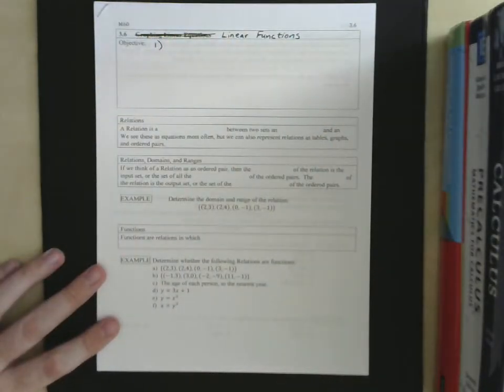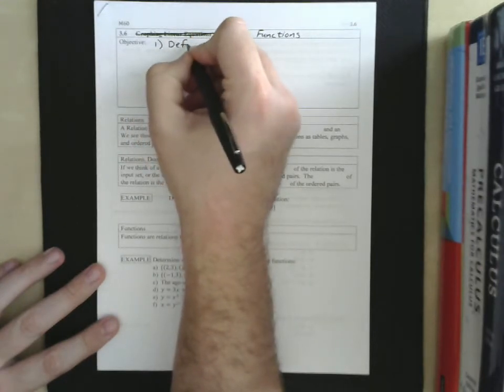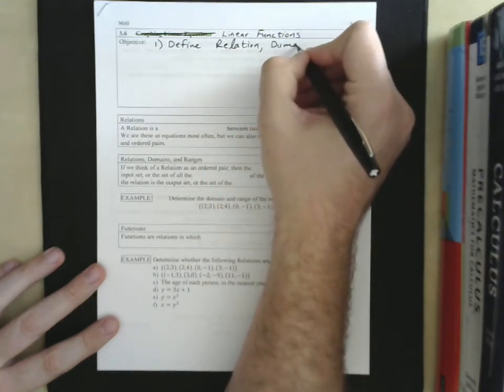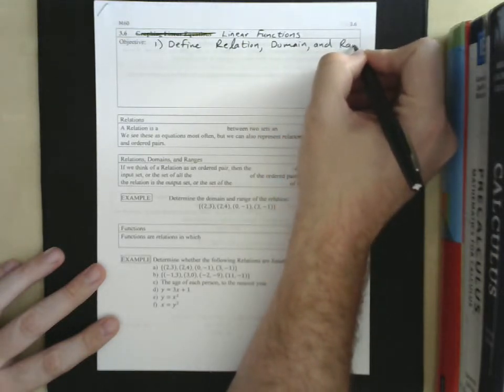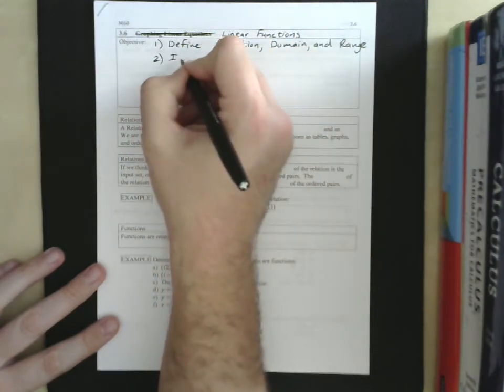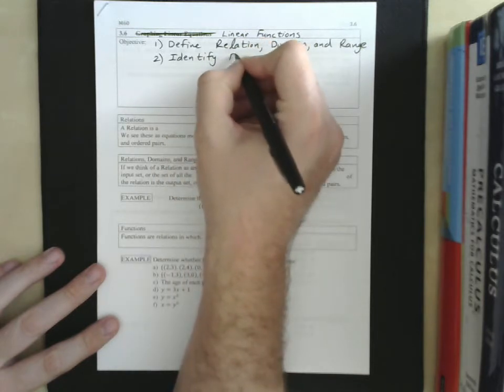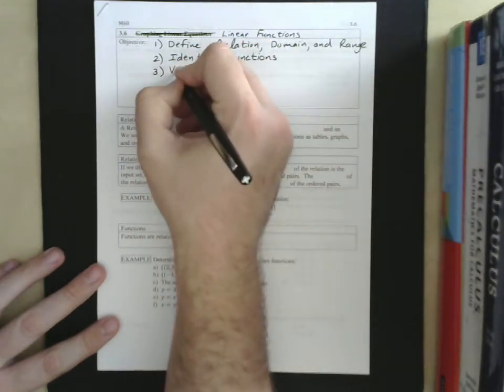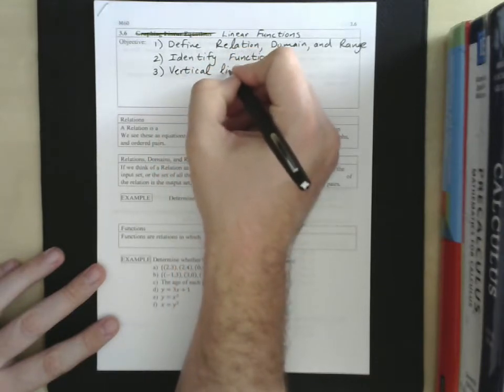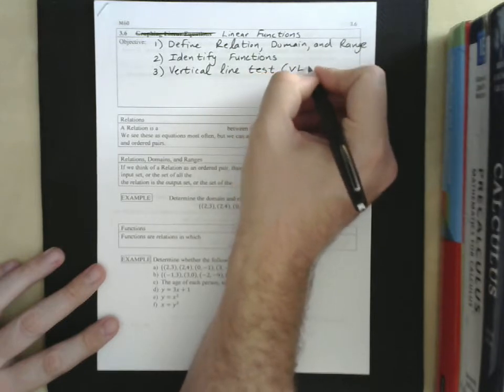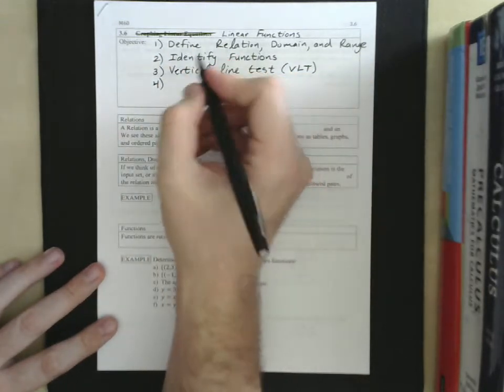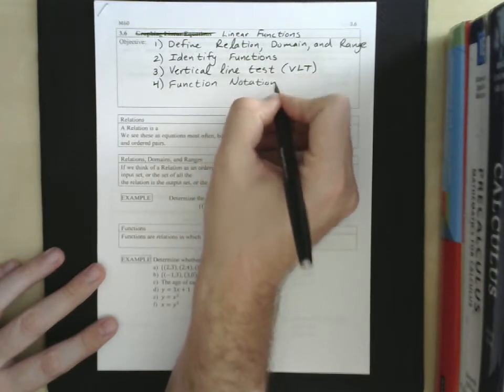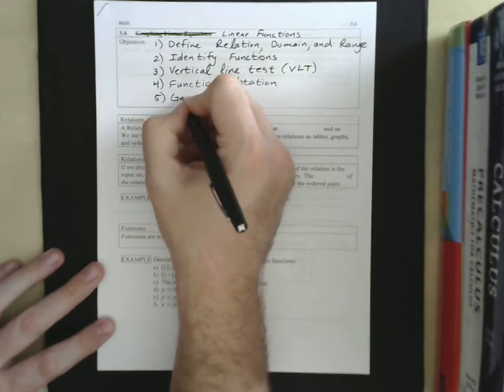We have five things to do in this section, five things to talk about. We're going to first define a couple new terms. We're going to define relation, domain, and range. And then, secondly, we're going to look at how we identify functions. Thirdly, we're going to talk about the vertical line test, or VLT. Fourth, we're going to look at function notation. And lastly, we're going to look at graphing linear functions.